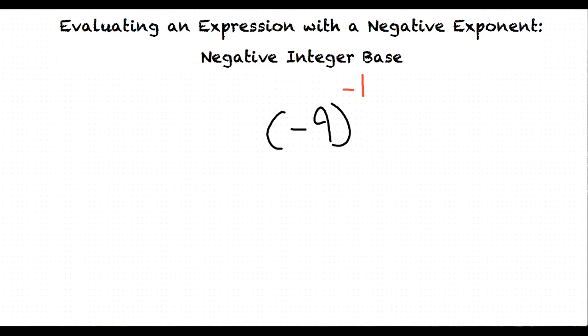Move the integer and the exponent to the denominator? Exactly! This results in 1 over negative 9. We do not need to change the sign of the integer since we were only moving it from the numerator to the denominator.